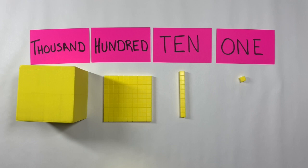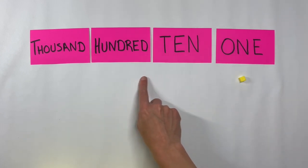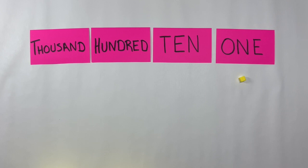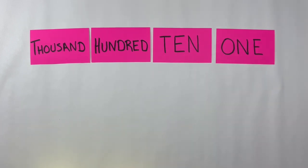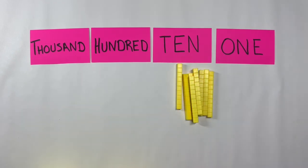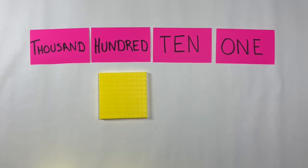In fourth grade there are a couple of ways we want to extend place value understanding. First, we want students to think multiplicatively about the relationships among place values. Up until now they've been able to think additively — adding ones until they get enough to make a ten, or adding tens until they can regroup into a hundred. But now in fourth grade we want to think multiplicatively.